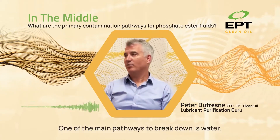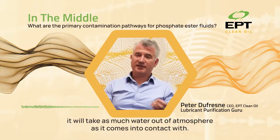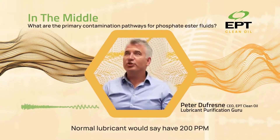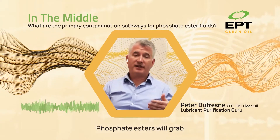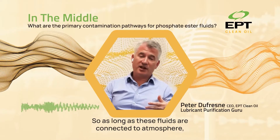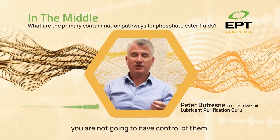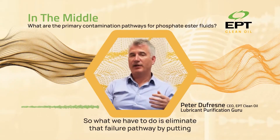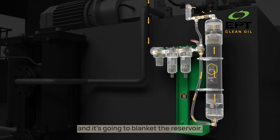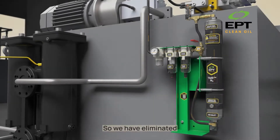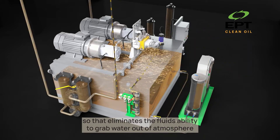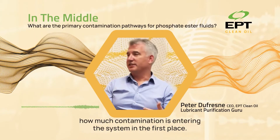One of the main pathways to breakdown is water. Because of the unique fluid properties of phosphate ester, it will take as much water out of atmosphere as it comes into contact with. A normal lubricant would have 200 ppm considered extremely high in a lube oil application. Phosphate esters will grab 2,000 ppm out of atmosphere alone, with no additional water ingress. So as long as these fluids are connected to atmosphere, you are not going to have control of them. What we have to do is eliminate that failure pathway by putting a TMR on there, which is going to generate high purity nitrogen from a regular compressed air source, blanket the reservoir, and exhaust out the breather element. So we have eliminated atmospheric contact with the EHC fluid, which reduces significantly how much contamination is entering the system in the first place.